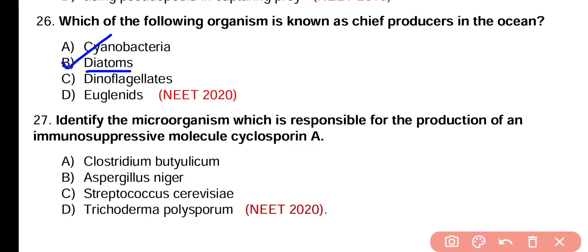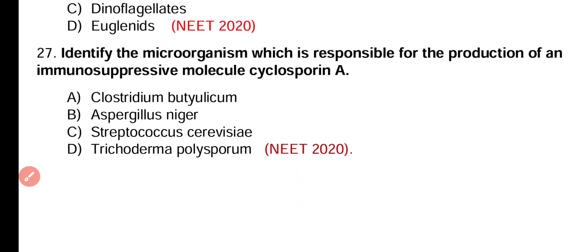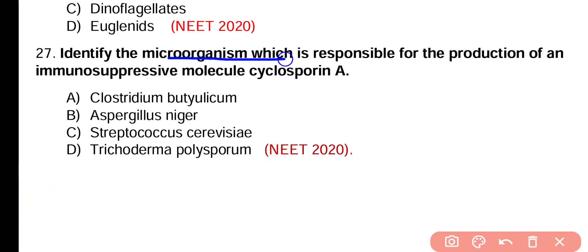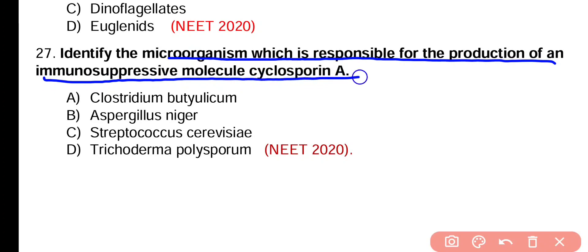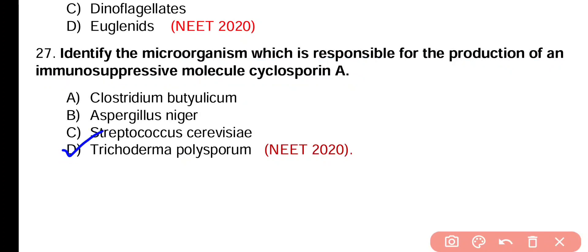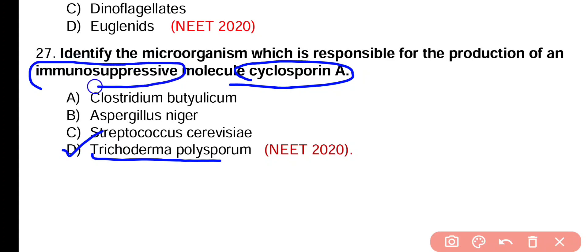Question number 26. Which of the following organisms is known as chief producers in the ocean? Cyanobacteria, diatoms, dinoflagellates, or euglenoids. Correct answer is option B. Diatoms are the phytoplanktons and they are the major oxygen producers and chief producers in the ocean.